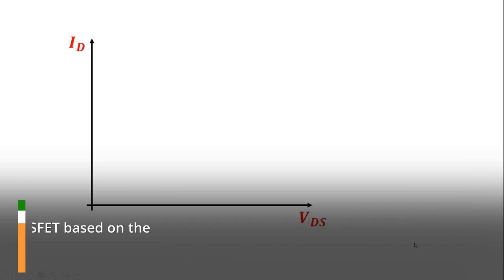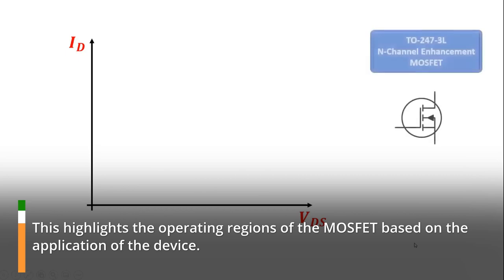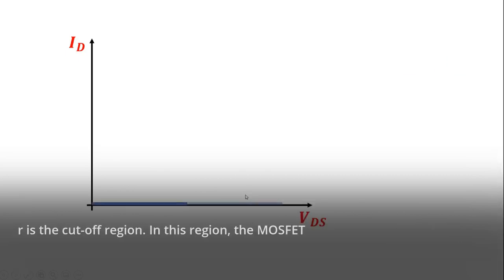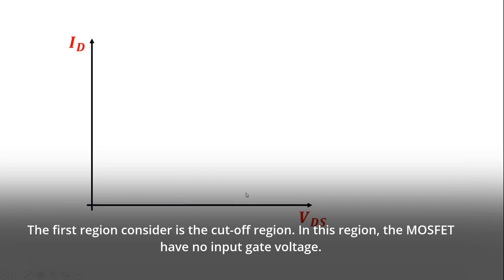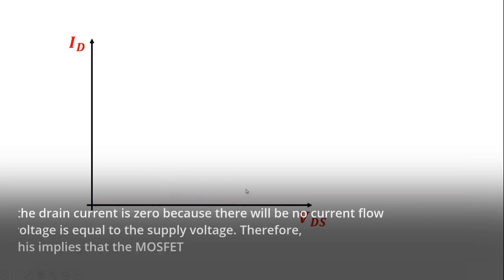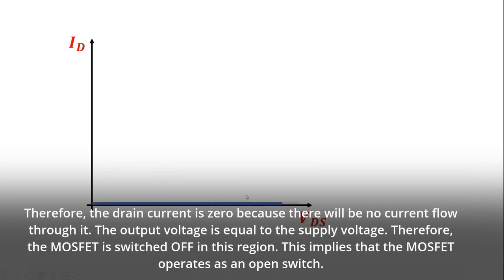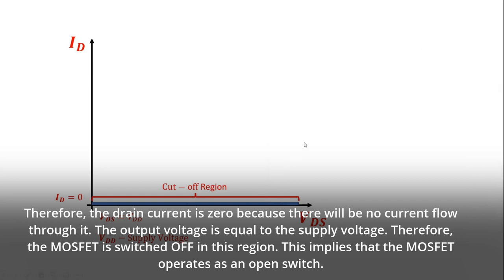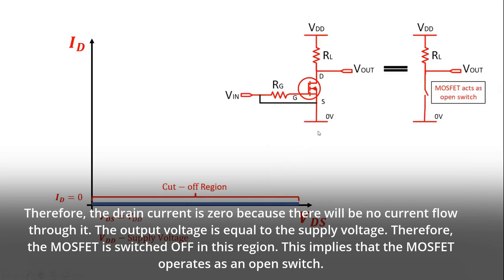This highlights the operating regions of the MOSFET based on the application of the device. The first region considered is the cutoff region. In this region, the MOSFET has no input gate voltage. Therefore, the drain current is zero because there will be no current flow through it. The output voltage is equal to the supply voltage. Therefore, the MOSFET is switched off in this region, which implies that the MOSFET operates as an open switch.